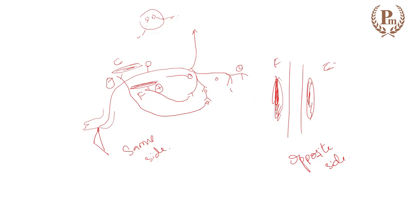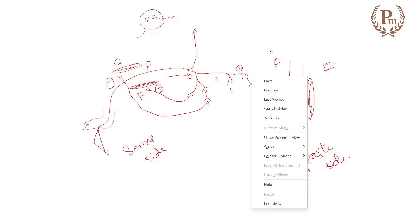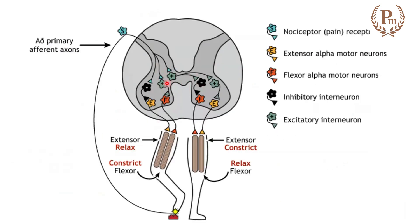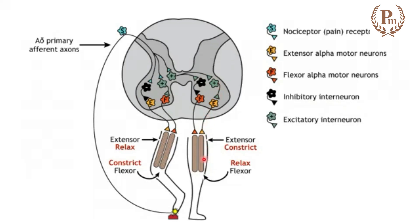I need an inhibitory interneuron — or internuntial cell as we call it. For the opposite limb, the flexor has to be inhibited, and we do it with the help of the inhibitory interneuron, which is going to inhibit the flexor. But there has to be extension of the extensors — a stimulatory effect to the extensors. Ultimately, what will be the net reflex? When I get a pain stimulus in that limb, the limb goes for withdrawal.